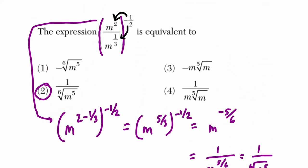So you have m to the second over m to the one-third, and you want to distribute the negative one-half exponent out here. And I just double-checked to get that, right? Okay.